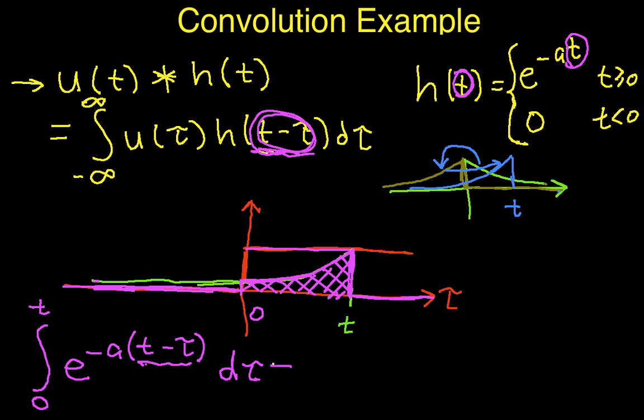If we work this integral, we have an e to the minus a t. Again, t is a constant with respect to our integral of our variable of integration tau.